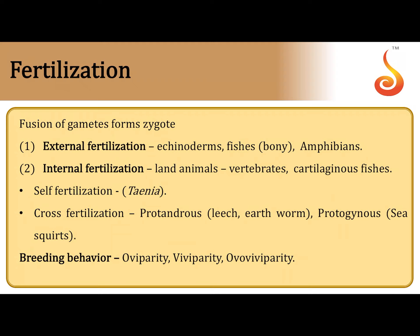Fertilization is the fusion of the male and the female gametes, resulting in the formation of a diploid cell called a zygote. Depending upon the site of fertilization, if it happens outside the body of the parent in the surrounding medium it is called external fertilization. If it happens within the body of an animal it is called internal fertilization. Examples of external fertilization include echinoderms, bony fishes, and amphibians.